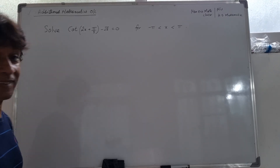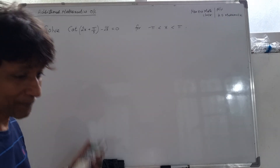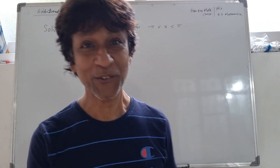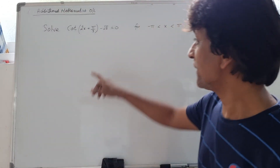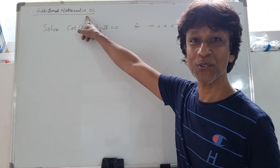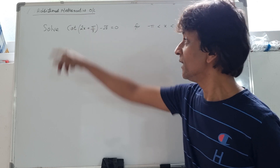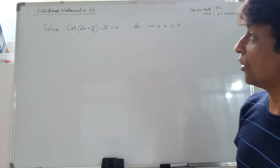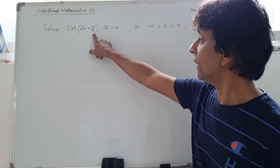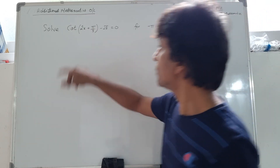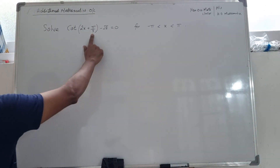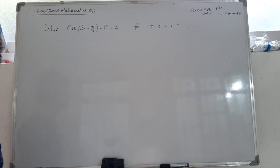Hello, it's been a while since my last video, so we're going to try and solve this equation now. This comes from the additional math paper of June 2021: solve the equation cot(2x + π/3) − √3 = 0.